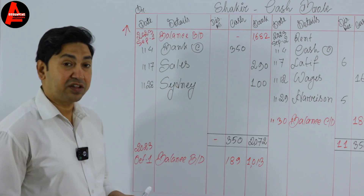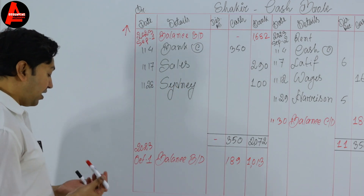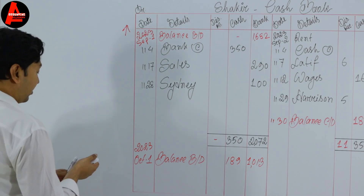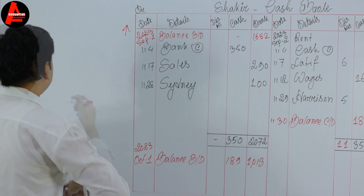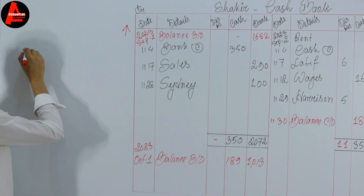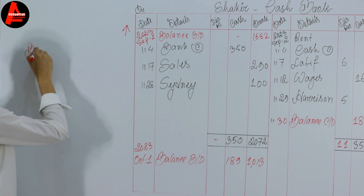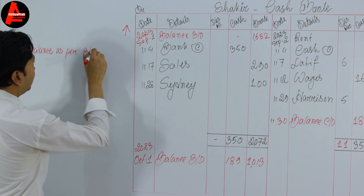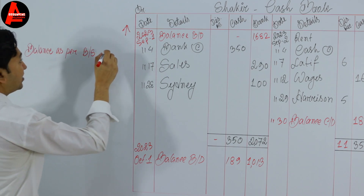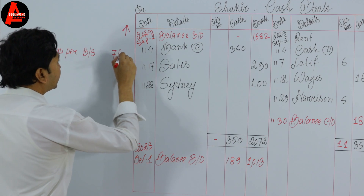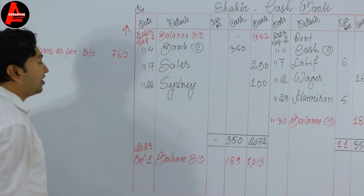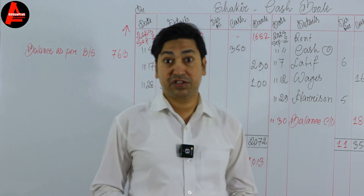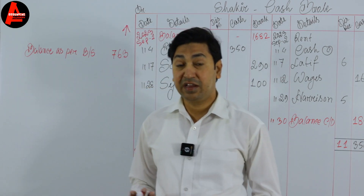From the question, the bank statement balance is 763 dollars. So let us write here: balance as per bank statement = 763 dollars. Now we will take all the errors in the bank statement to get the correct balance.